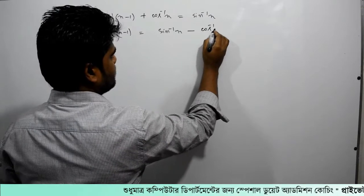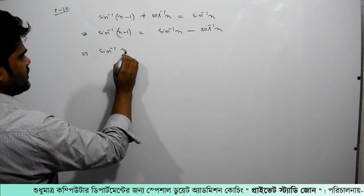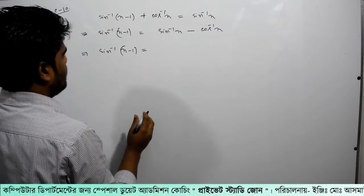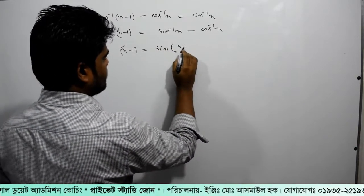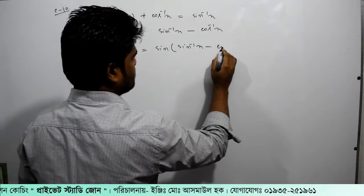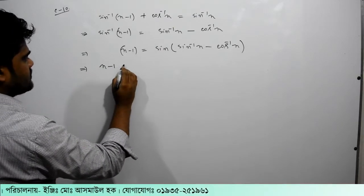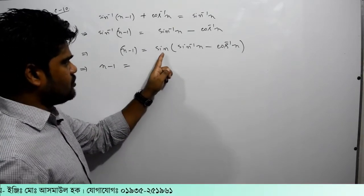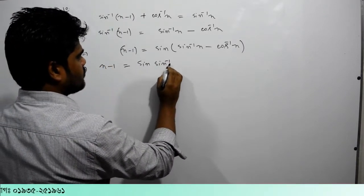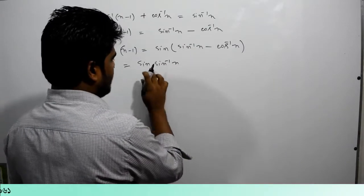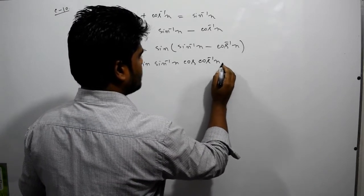sin⁻¹x minus 1 equal to sin⁻¹x minus cos⁻¹x. তাহলে এপাশে থাকে কতো x minus 1 equal to এটাও গিন্দু সূত্র। sin(a-b) সূত্র কী? sin a minus b তো sin a cos b...